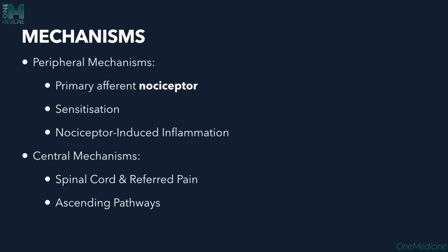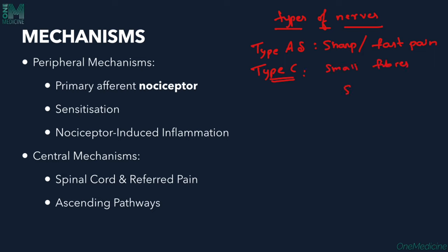Pain is one of the most primitive of the sensations that humans have experienced, and it is transmitted by two different types of nerves. Type A-delta fibers carry something called sharp or fast pain, whereas type C fibers, which are unmyelinated and small, carry the slow and dull pains.